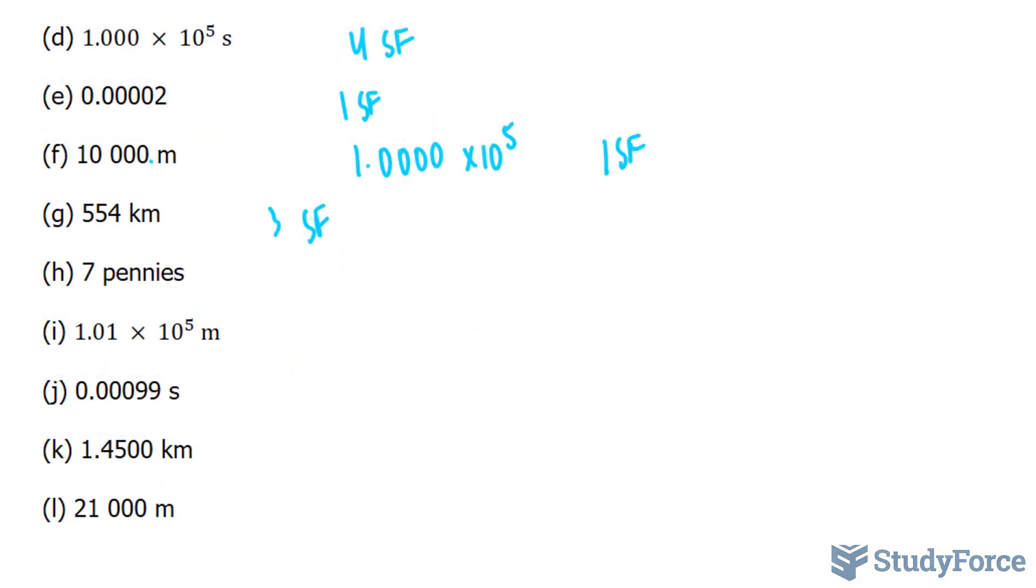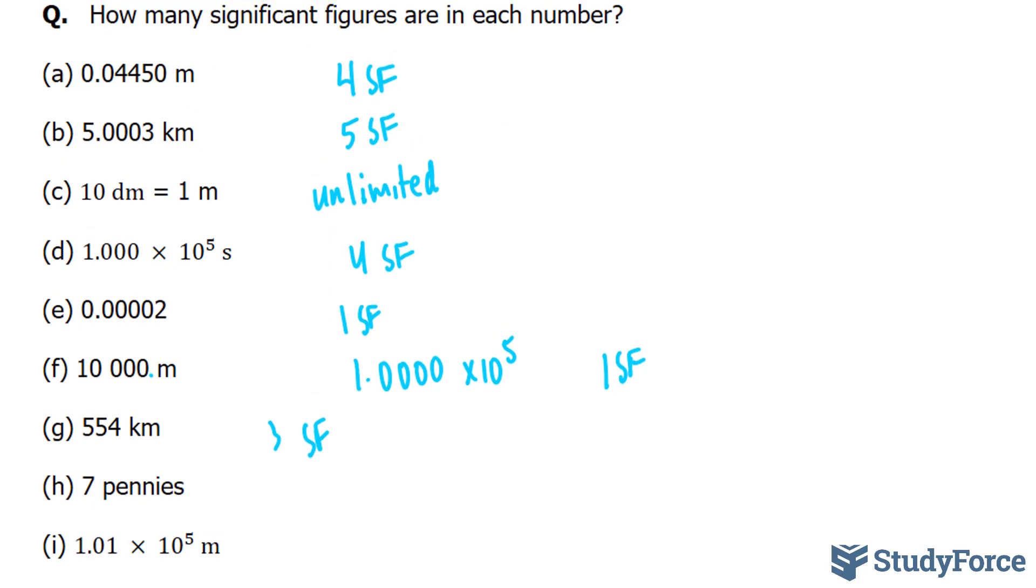In question H, we have seven pennies. Seven pennies is an exact number. So it qualifies as having an infinite number of significant figures. Therefore, it follows the same rules as in question C, where if you have an exact number, then it's unlimited.